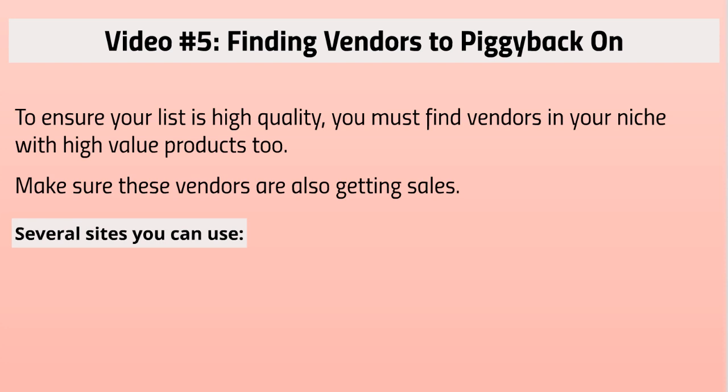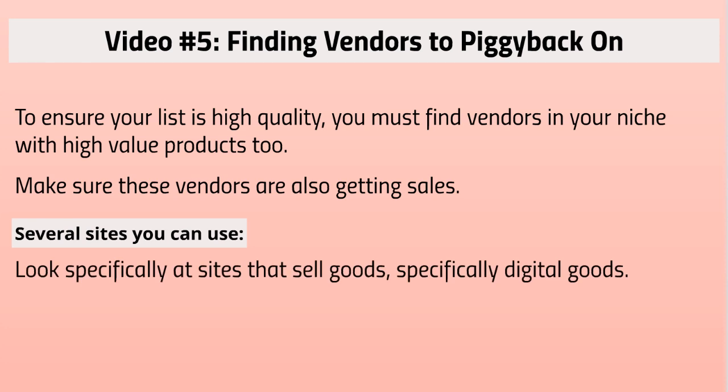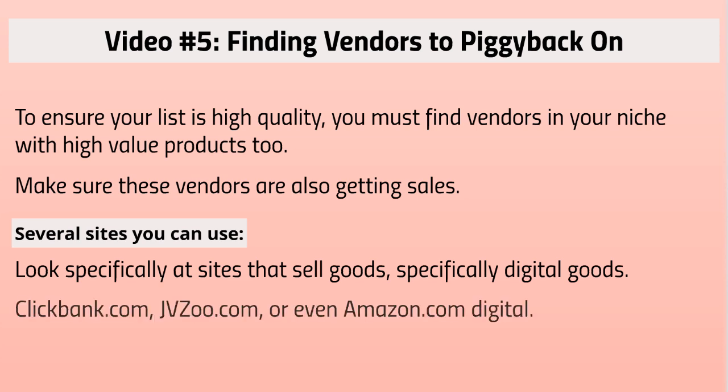There are several sites you can use to find vendors. You want to look specifically at sites that sell digital goods — if you are selling a digital book, a digital video course, or something digital or intangible. You could technically look at Amazon.com, but most of those are physical goods. That said, you could convert your product into a physical good. Using Amazon Kindle, you can often find the author and do research to see if they're building a list online.